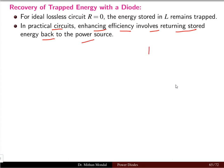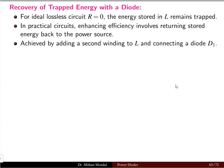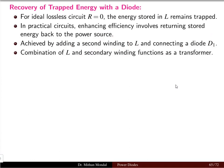If you have energy present in the inductor, this energy has to be returned back to the power source. There is some source which is delivering the power, and in the practical circuit, the efficiency will be enhanced only when this energy is returned back to the source. This is achieved by adding a second winding to the inductor and connecting a diode — we require one more winding as well as a diode connected in the network.